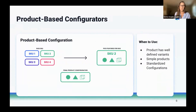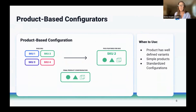Product-based configuration has been the precedent in the CPQ and e-commerce space. Sales reps are able to find and select products and services using SKUs in an existing product catalog. This configuration assumes that the buyer has an existing solid knowledge base about the business and the product at hand. Outside of direct sales, product-based leaves some room for growth. However, we do see product-based configuration is useful when the product has defined variance, the products are more simple, and there are standard configurations.